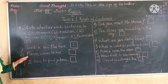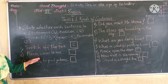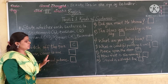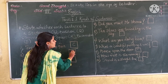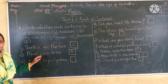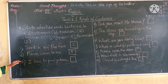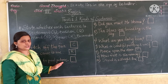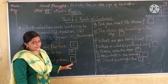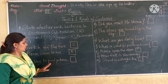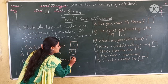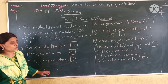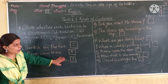Now the second one: Please come to meet me. Now it is a request, so I will write R. The third one: I love to paint pictures. So it is a statement, so I will write S. I hope till here you have understood.